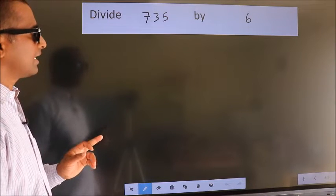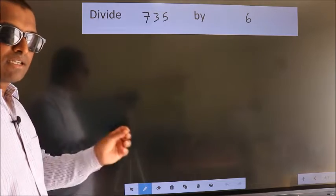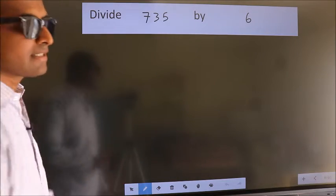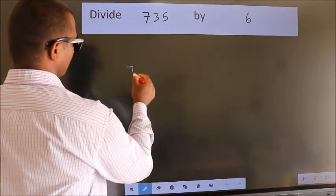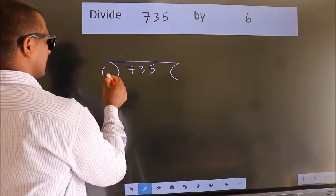Divide 735 by 6. To do this division, we should frame it in this way. 735 here, 6 here.